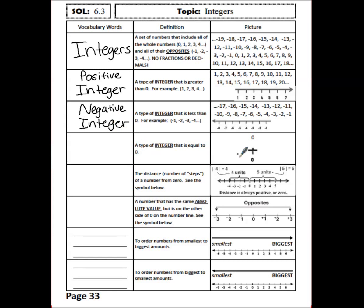A type of integer that's equal to 0 — where 0 is the only one — is a neutral integer. This is the third and last type of integer.